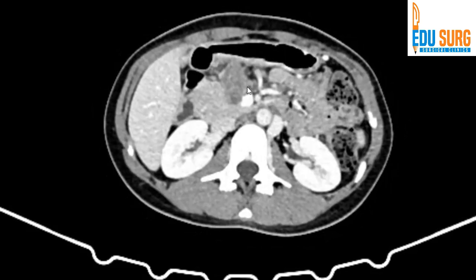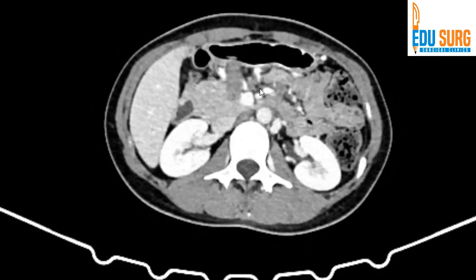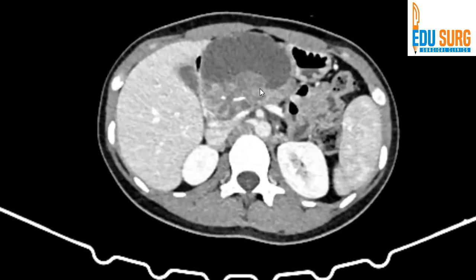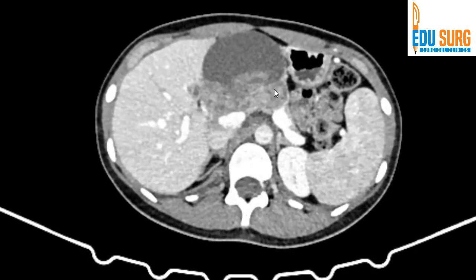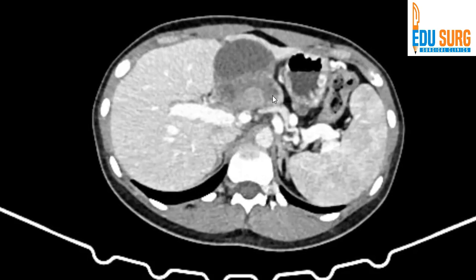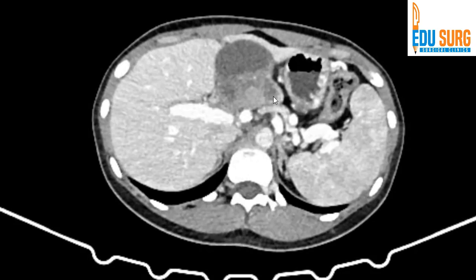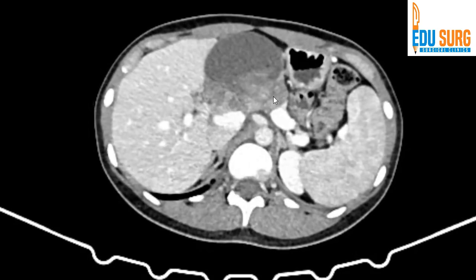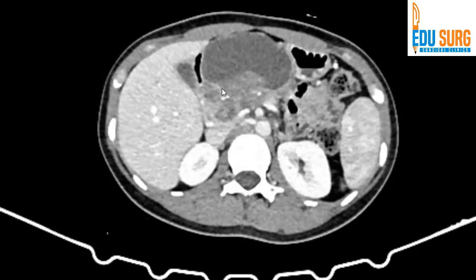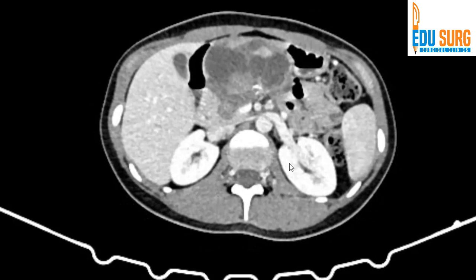SPENs usually present on one of two sides: if it is on the left of the portal-SMV junction, we do a distal pancreatectomy; if it's on the right, then you do a Whipple or a central pancreatectomy. But here, if you can see, beyond the tumor there is no pancreas — the pancreas is getting over. So most of the pancreas is involved by the tumor, and there is splenic vein thrombosis.